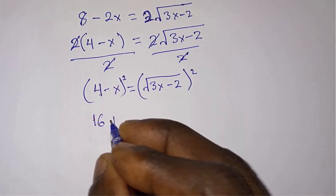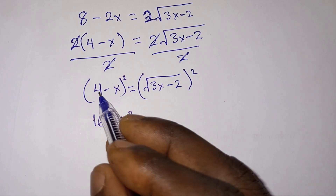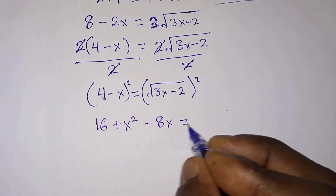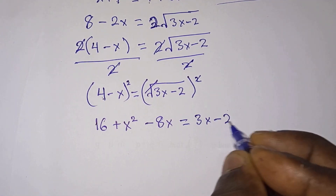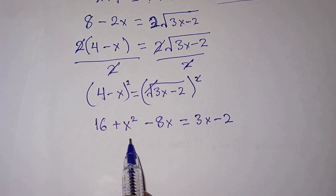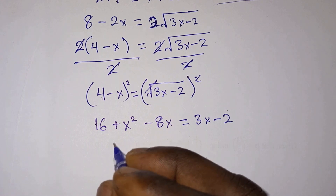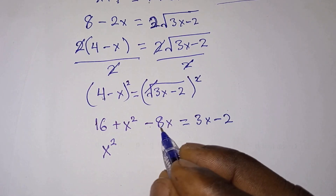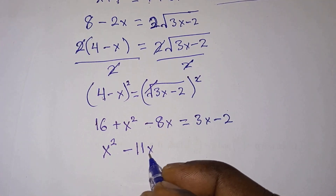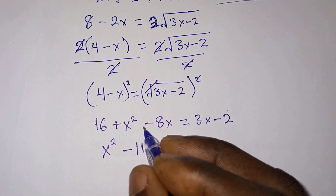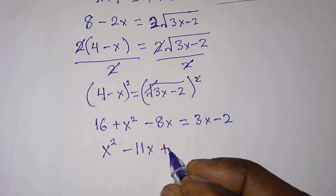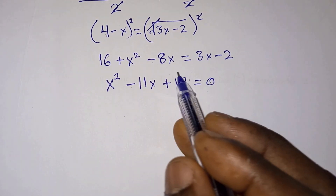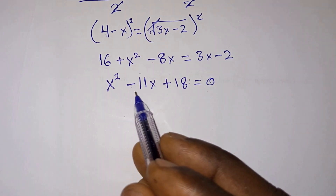Let's expand the left hand side: 4 squared is 16, then negative x squared is positive x squared, and 4 times negative x times 2 is negative 8x. This equals 3x minus 2 on the right. Since we have a quadratic equation, let's equate everything to zero. Moving 3x to the left gives negative 8x minus 3x, that is negative 11x. Moving negative 2 to the left gives plus 16, making 18. So we have x squared minus 11x plus 18 equals zero.